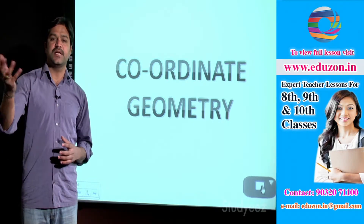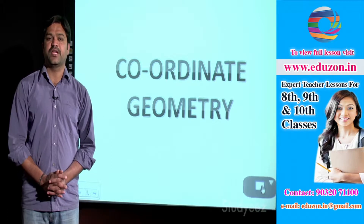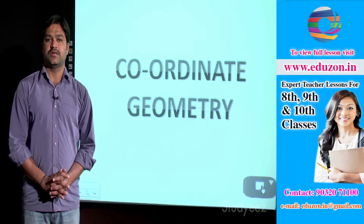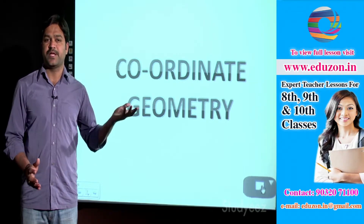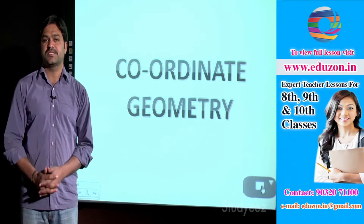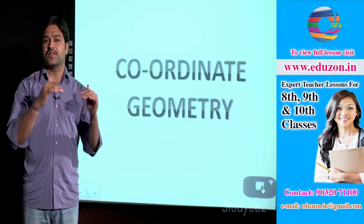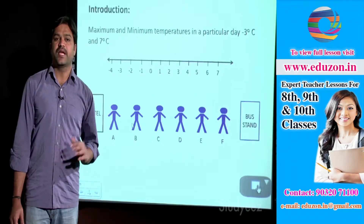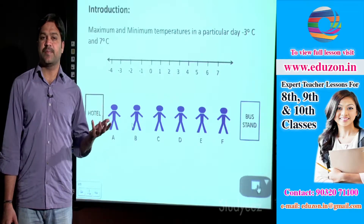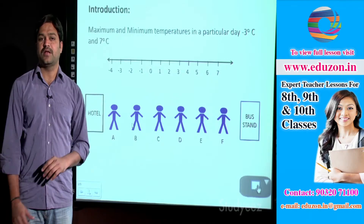Can you represent these values on the number line? Yes, we can represent them on the horizontal number line. Minimum temperature minus 3 centigrade degrees, maximum temperature 6 centigrade degrees. So we can represent the maximum and minimum temperature of a particular day on the number line.